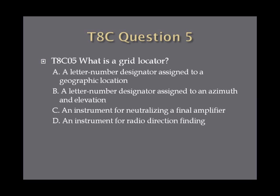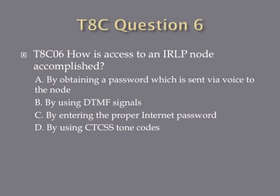Question five: What is a grid locator? A, a letter-number designator assigned to a geographic location. B, a letter-number designator assigned to an azimuth and elevation. C, an instrument for neutralizing a final amplifier. Or D, an instrument for radio direction finding. Question six: How is access to an IRLP node accomplished? A, by obtaining a password which is sent via voice to the node. B, by using DTMF signals. C, by entering the proper internet password. Or D, by using CTCSS tone codes.